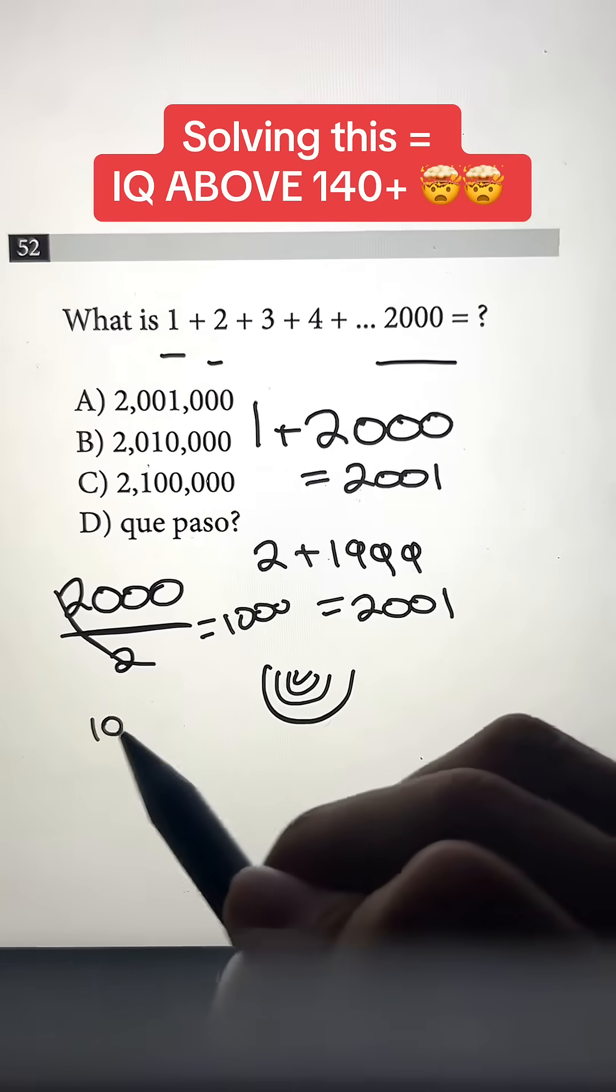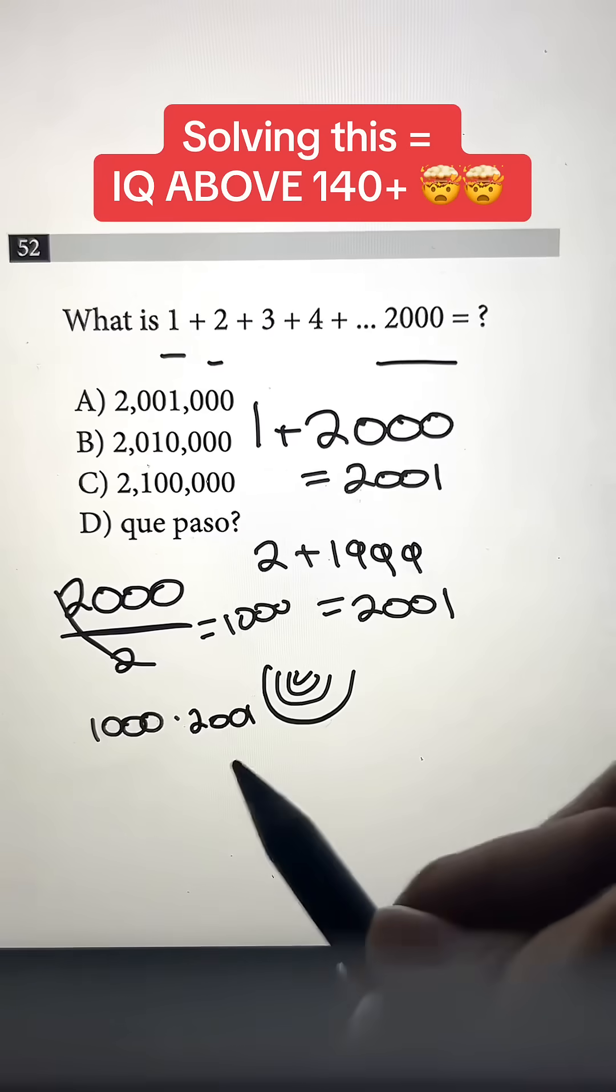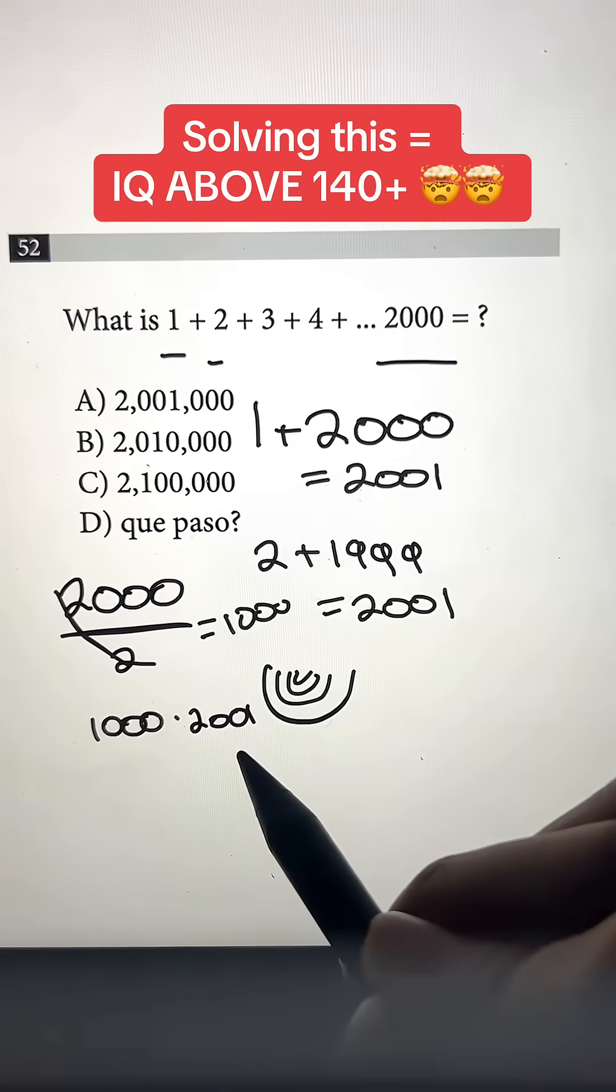But to find the answer, we still have to multiply 1,000 by 2,001, which is the amount in each pair. And that's a lot of work. So we're just going to do it a faster way.